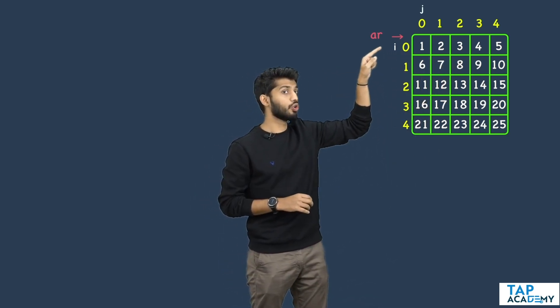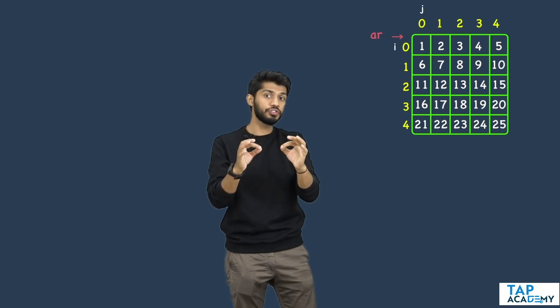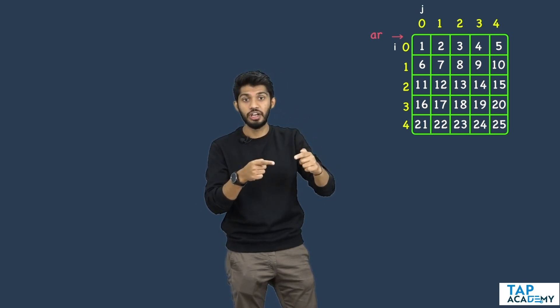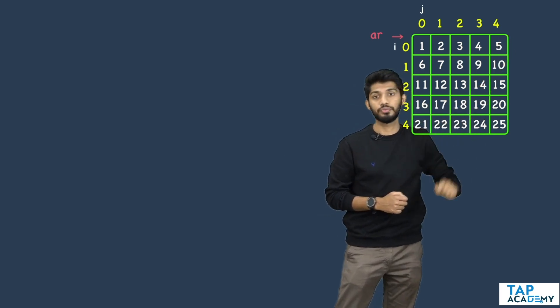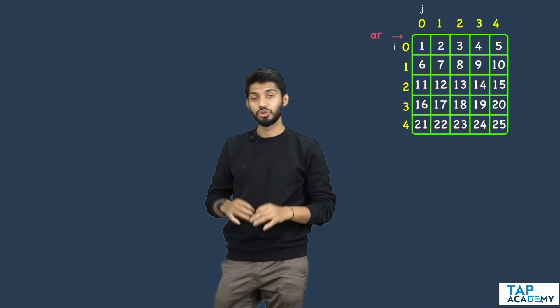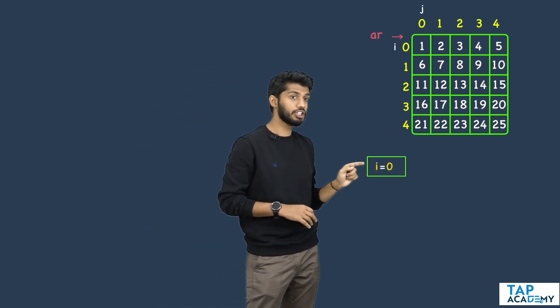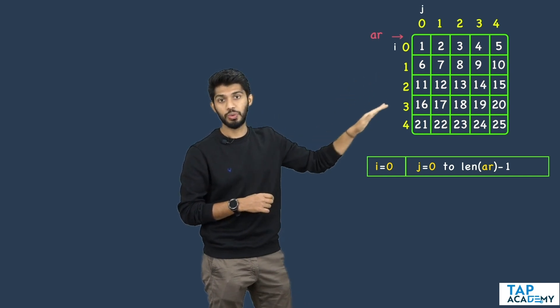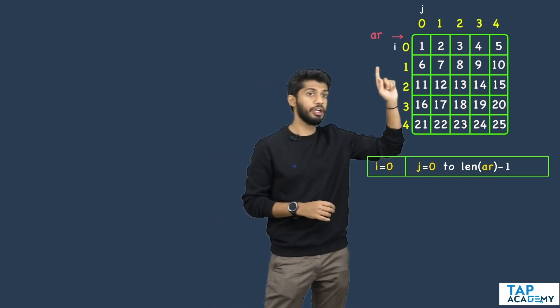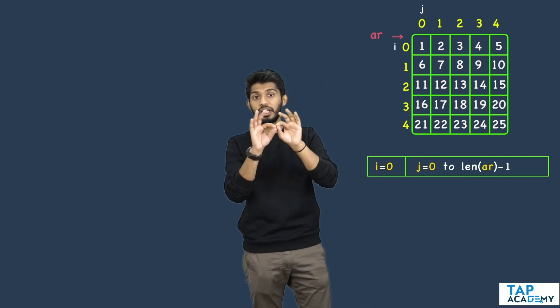For all elements in the first row, the row number is 0 and remains constant, but the column numbers keep changing. I will take two variables: i for rows and j for columns. Since the row number is constant at 0, i remains 0, and j will change from 0 all the way to the last index, which is length minus 1.